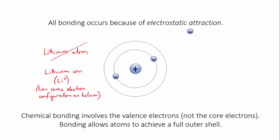So the electrons that take part in chemical bonding are the valence or outer shell electrons. The core electrons are not directly involved and we can ignore them for now.